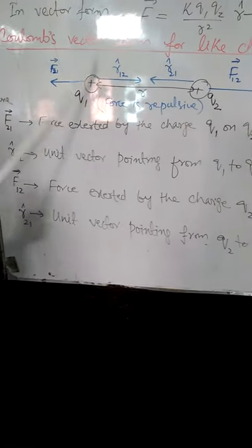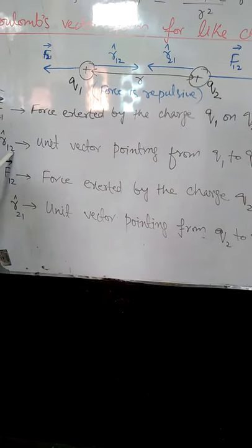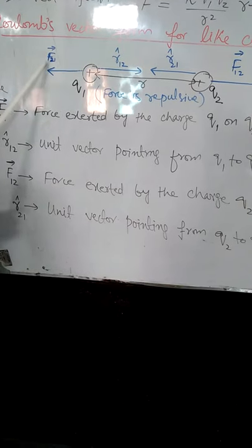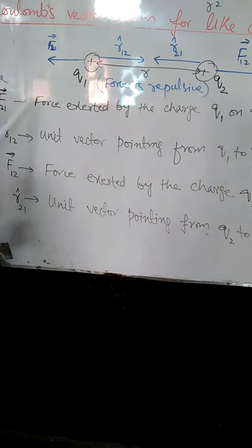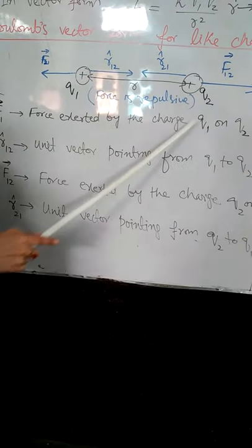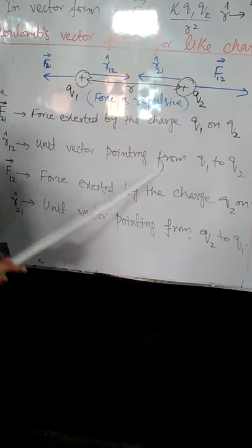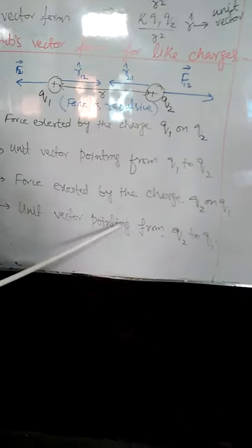There are four important parameters. Force exerted by the charge Q1 on Q2 is F21. R12 is unit vector pointing from Q1 to Q2. F12 is force exerted by the charge Q2 on Q1 and R21 is unit vector pointing from Q2 to Q1.